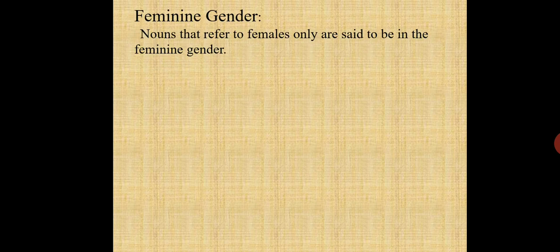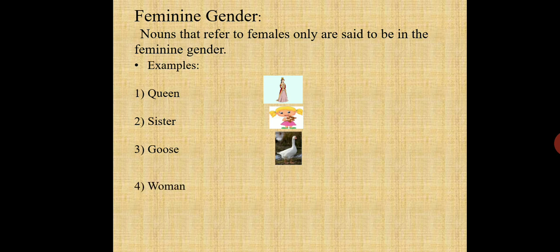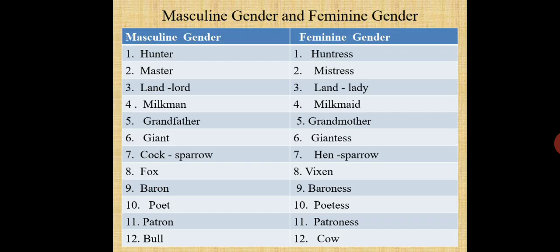Second, feminine gender. Feminine gender means nouns that refer to females only are said to be in the feminine gender. For example: queen, sister, goose, woman, peahen, etc.